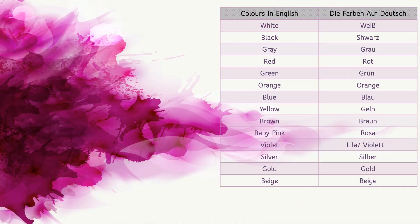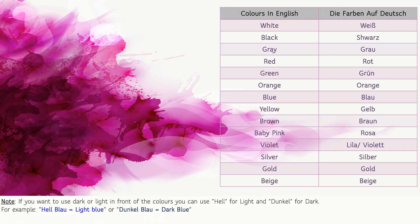In this slide I have mentioned what the color names are in English and what they are called in German. So let's go and learn them one by one. White — Weiß. Black — Schwarz. Grey — Grau. Red — Rot. Green — Grün. Orange — Orange. Blue — Blau. Yellow — Gelb.